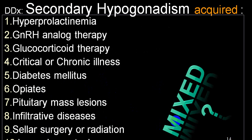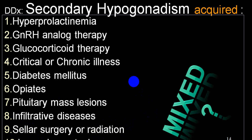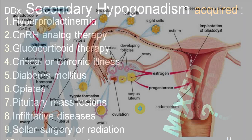Secondary acquired causes of hypogonadism commonly include hyperprolactinemia, GnRH analog therapy, long-term glucocorticoid therapy, chronic or critical illness, diabetes mellitus, opium consumption, pituitary mass lesions, infiltrative disease, surgery on the sella, radiotherapy for the pituitary gland, and rarely hemochromatosis. Hemochromatosis usually produces a mixed variety with both primary and secondary hypogonadism.